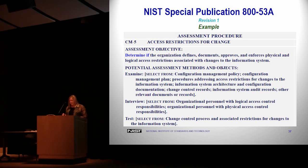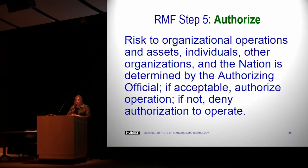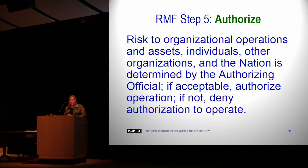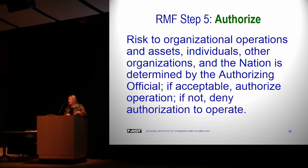Once the security assessment report is complete, it goes to the Authorizing Official. The Authorizing Official either accepts the risk to organizational operations, assets, individuals, other organizations, and the nation — and authorizes the system to operate — or denies it. If the Authorizing Official wants additional controls put in place first, they are effectively denying operation until those controls are implemented. The assessor would then assess the new controls, update the assessment report, and resubmit to the Authorizing Official for a final determination.